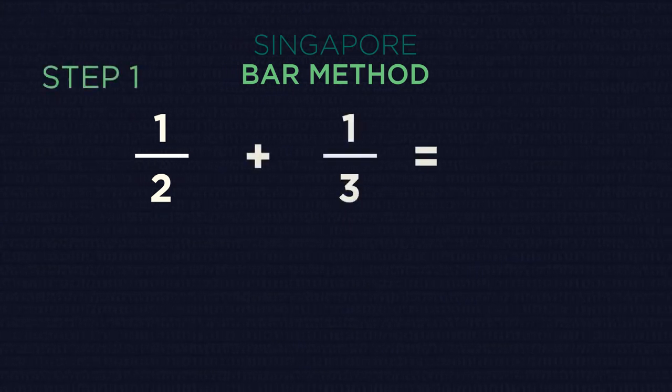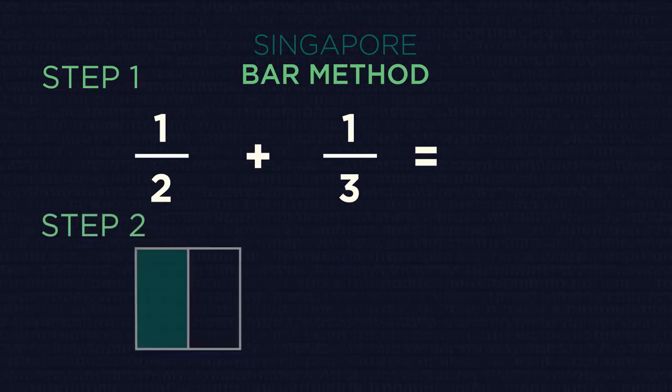Step 1. Write down your fractions. For example, one half plus one third. Now, draw the first fraction as vertical bars.